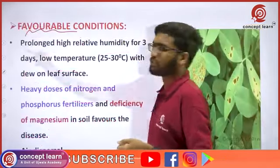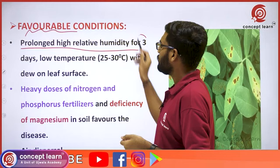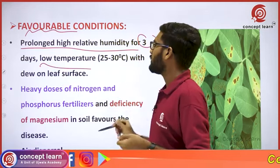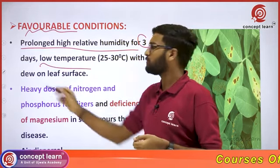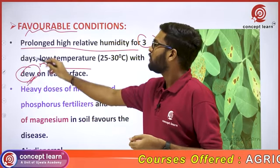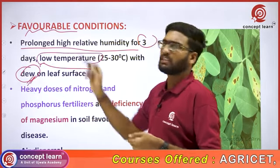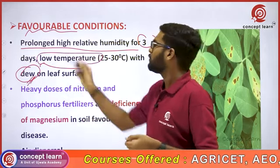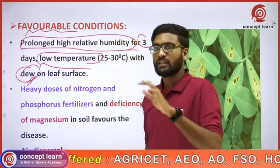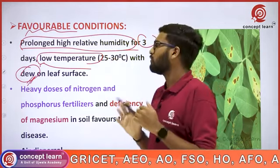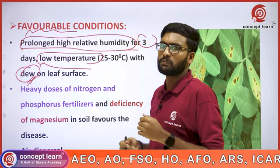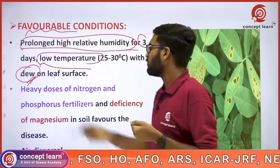Favorable conditions for leafspot disease in groundnut: prolonged high relative humidity for three days, and low temperature with dew on the leaf surface. When there is high relative humidity for several days along with dew and low temperature, these conditions are favorable for leafspot.